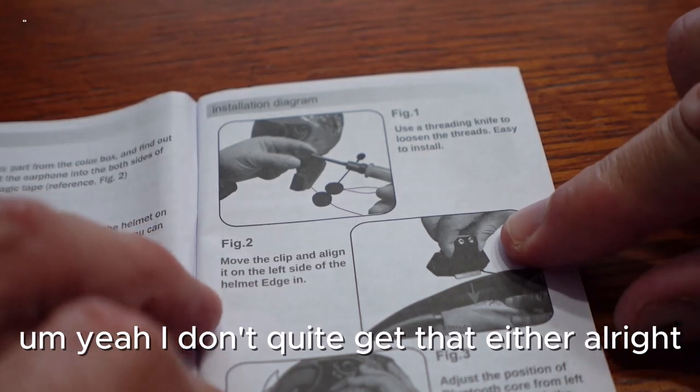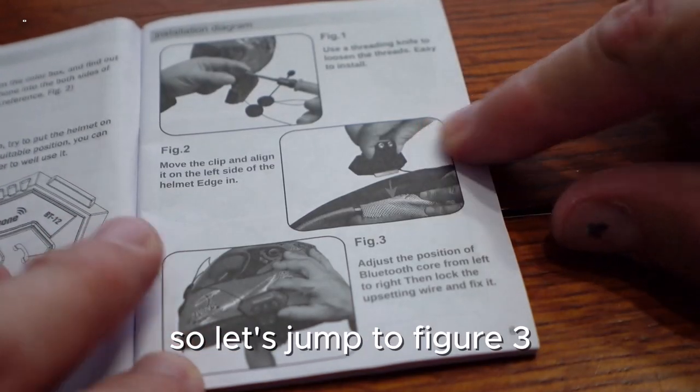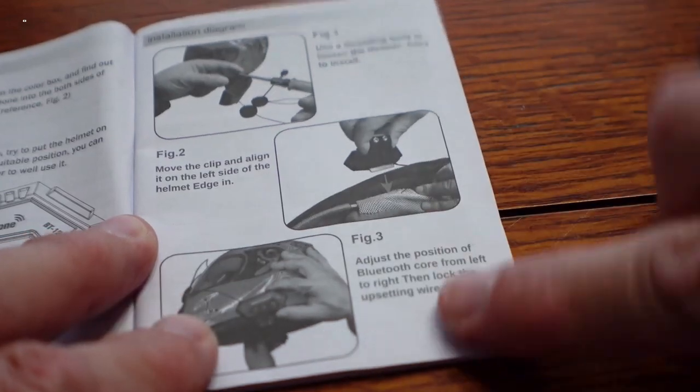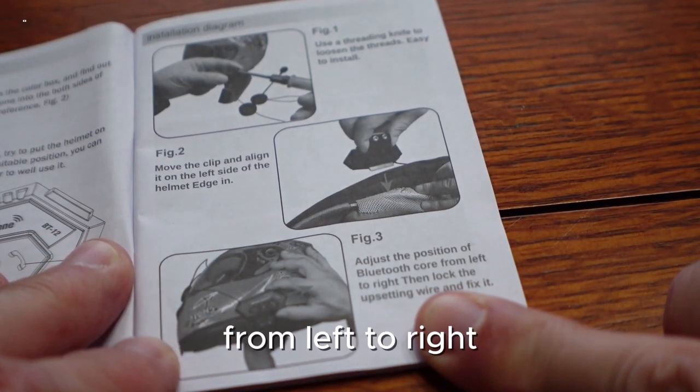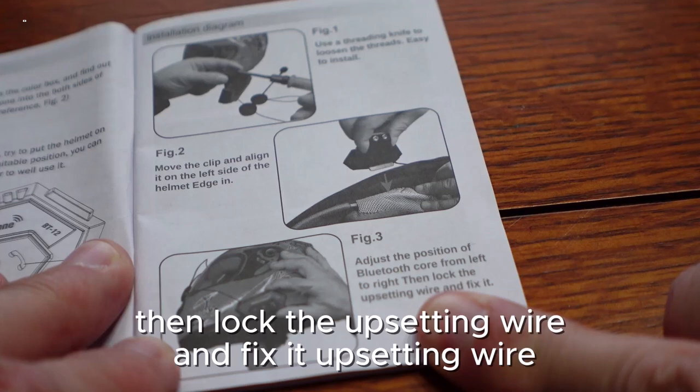All right, so let's jump to figure three: adjust the position of Bluetooth core from left to right, then lock the upsetting wire and fix it.